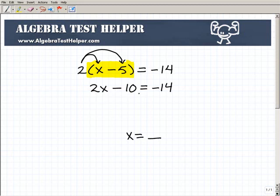Right now I have 2x minus 10 equals negative 14. Before you can get x equals, we have to get rid of this negative 10 and this 2 next to x. You always take care of anything that has to do with addition and subtraction first before multiplication and division when solving equations. So let me show you what I'm talking about.